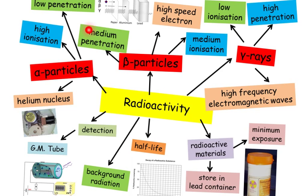Beta particles have got a medium penetration and can be blocked by a few millimeters of aluminium. What are they? They're high speed electrons and they've got a medium ionization.